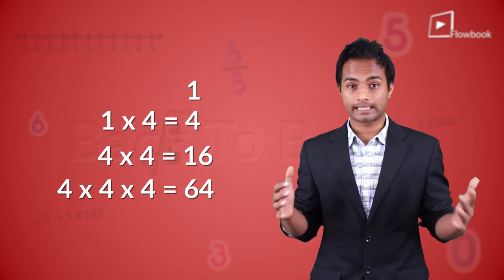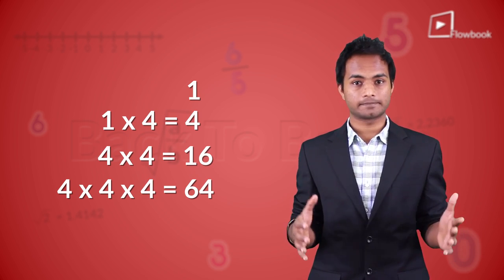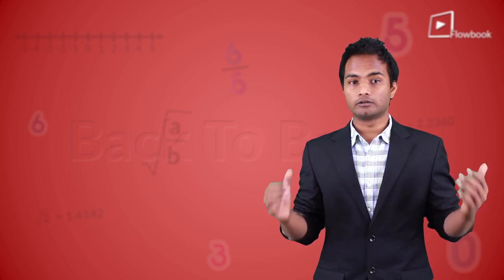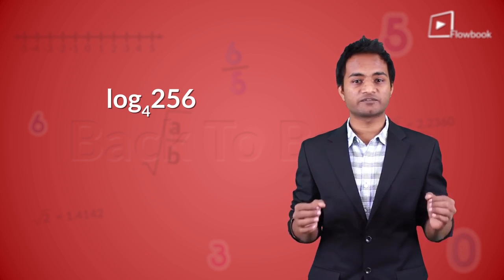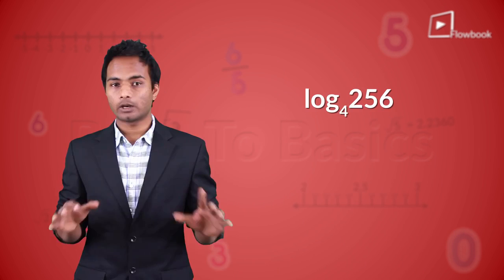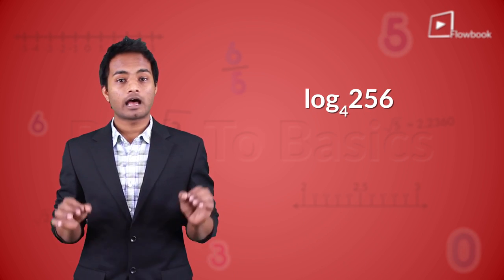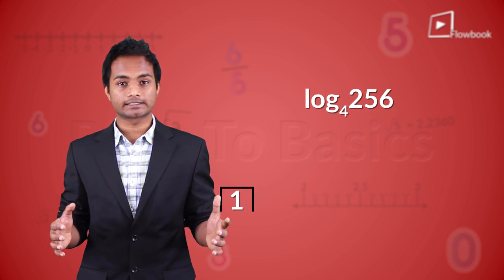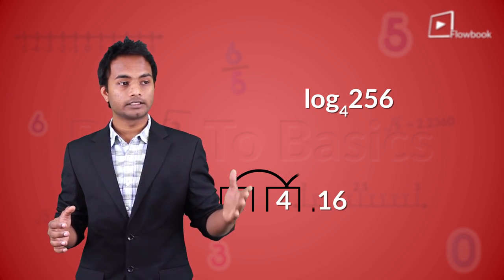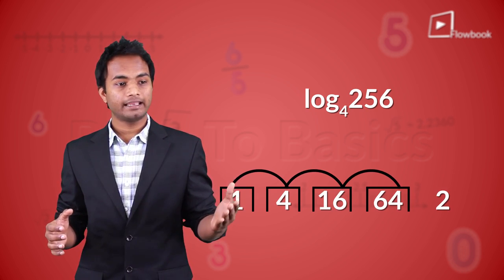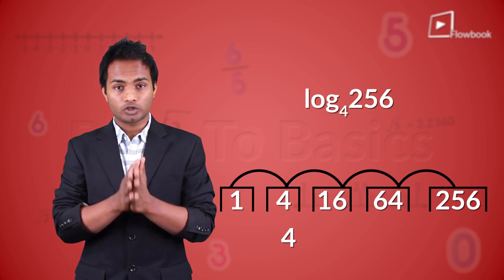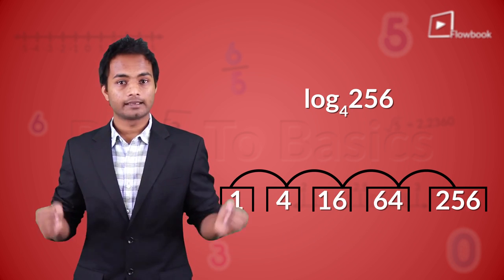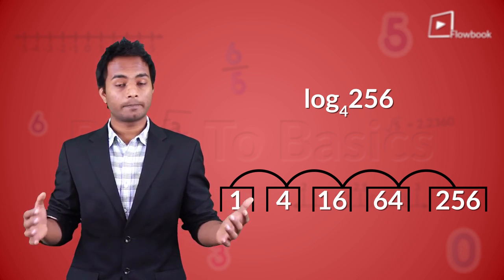Logarithms is about these number of steps. Say we want to find the value of log 256 to the base 4. In this system of 4, how many steps do you need to take to reach 256? That's 1, 2, 3, and 4 — so you need four steps to reach 256.